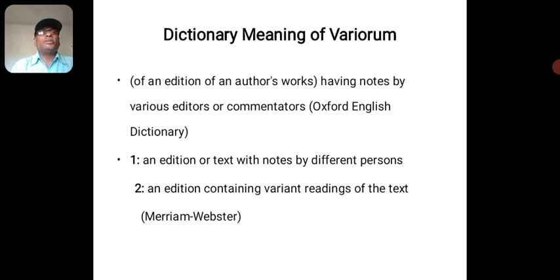The Dictionary Meaning of Variorum: having notes by various editors or commentators. First meaning: an edition or text with notes by different persons. Second meaning: an edition containing variant readings of the text.